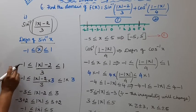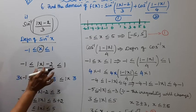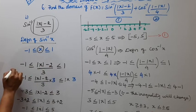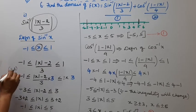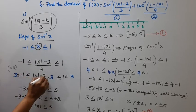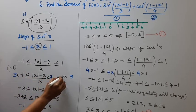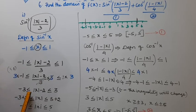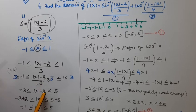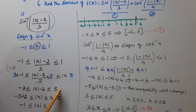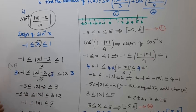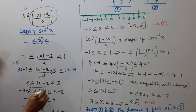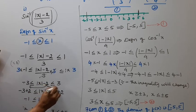Multiply throughout by 3. 3 into minus 1 gives minus 3, less than or equal to mod x minus 2, less than or equal to 3. Adding 2 to all parts: minus 3 plus 2 less than or equal to mod x, less than or equal to 3 plus 2. That gives minus 1 less than or equal to mod x less than or equal to 5.